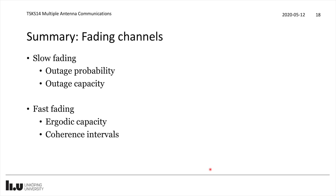We also talked about fading channels. In slow fading channels we get one random realization throughout our transmission, and we need to select how to transmit before we know what kind of realization we're having. That's why we talked about the outage probability — the probability that we happen to transmit with a data rate the channel cannot support — and the outage capacity, which is a way of selecting the data rate to fit a particular outage probability. In fast fading cases, we talked about ergodic capacity and coherence intervals. For both categories of fading channels we benefit from having multiple antennas — in particular we can achieve diversity gains.